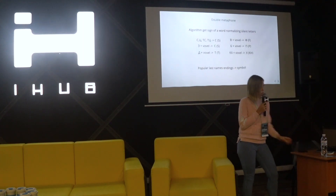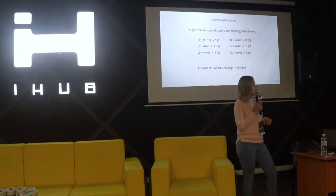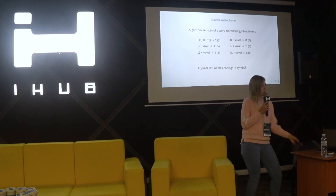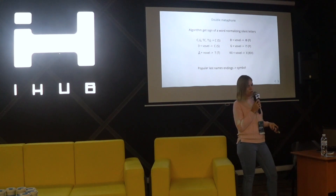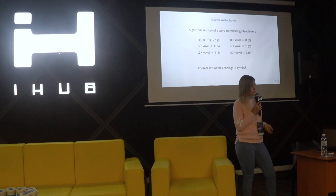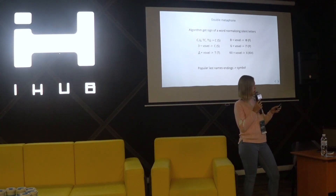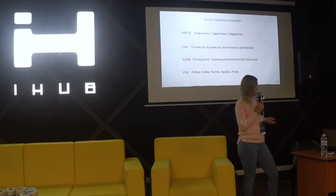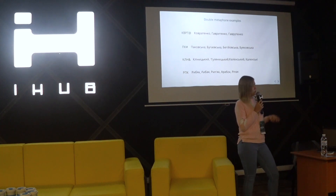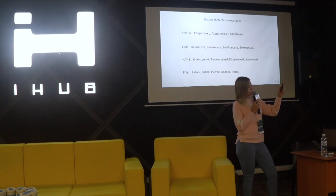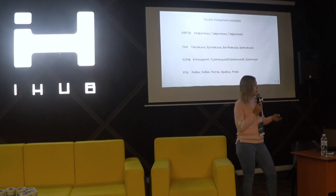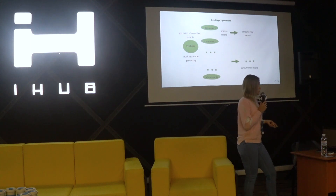Here is how Double Metaphone works. For example, certain first characters sound like 'S', and in Double Metaphone the ending of a last name changes to a symbol. So similar-sounding last names will be written one way in Double Metaphone symbols, and we can find them that way.